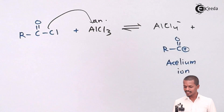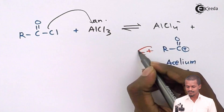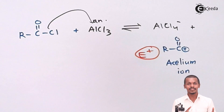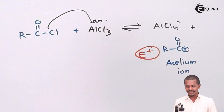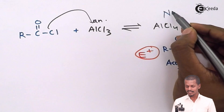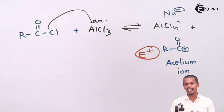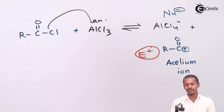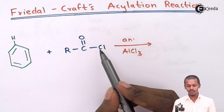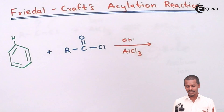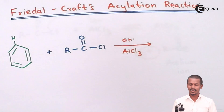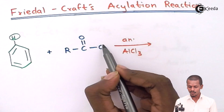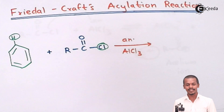This acylium ion acts as an electrophile, which will be substituted on benzene by removing one hydrogen atom. The nucleophile AlCl4⁻ removes the hydrogen atom from benzene so that the acylium ion gets substituted on that carbon atom. AlCl3 removes the Cl⁻ ion forming the RC=O⁺ acylium ion.